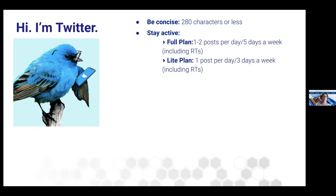A full plan is one to two posts a day, five days a week — a post can include a retweet, which is when you're sharing someone else's tweet. A light plan can be one post per day, three days a week, and a post can again include a retweet. The idea is just to stay active. Whether you do it Monday, Wednesday, Friday or Tuesday, Thursday, make sure you dedicate an hour or so on those days to your Twitter account.